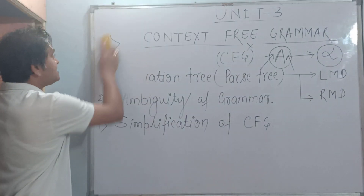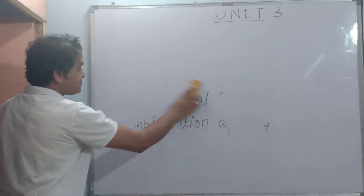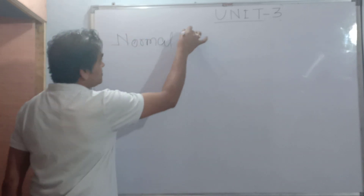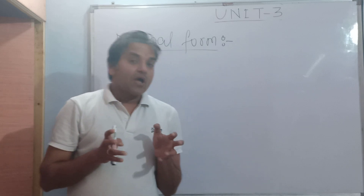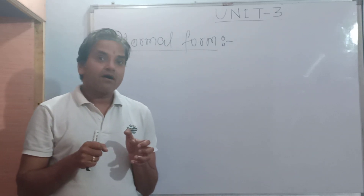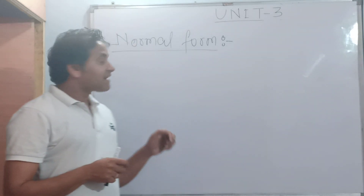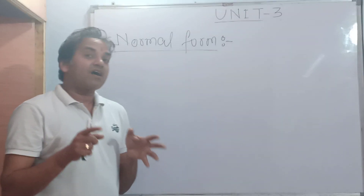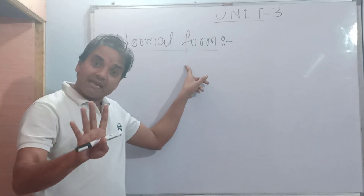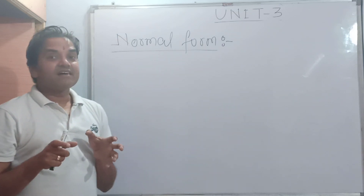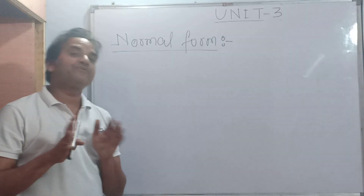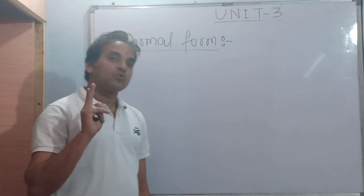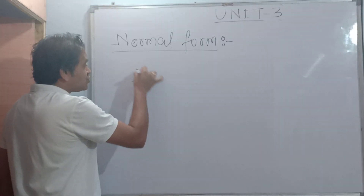Now we will discuss the original topic, which is normal form. If we apply certain restrictions or rules on a grammar, then the grammar is converted into a normal form. There are different types of normal forms, but here we discuss only two: the first normal form is Chomsky Normal Form.